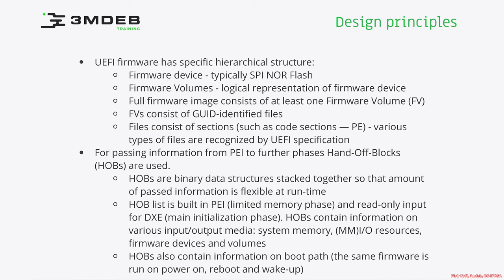A full firmware image typically consists of at least one firmware volume but can have multiple ones. Firmware volumes consist of GUID-identified files, and those files consist of sections — for example, a code section and a data section. The code section contains a portable executable file created by module compilation. There are various file types recognized by the UEFI specification, but those are the most important hierarchical components.